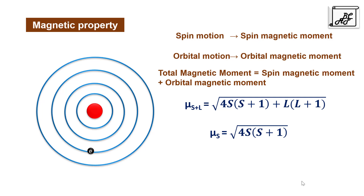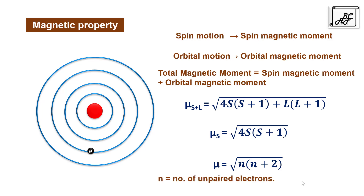The d-orbital which contains the characteristic electron responsible for the magnetic property is involved in bond formation with the ligand. Due to this bond formation the electron's orbital motion is quenched, and the total magnetic moment is only due to spin motion. This is calculated by the spin-only formula: μ(s) = √(4S(S+1)), or for d-block elements, μ = √(n(n+2)), where n is the number of unpaired electrons.